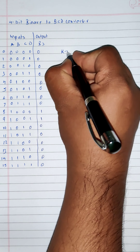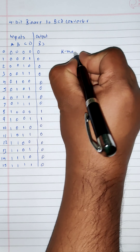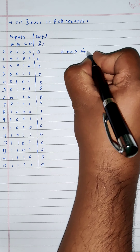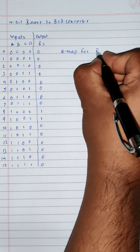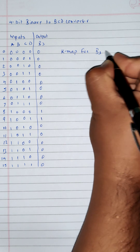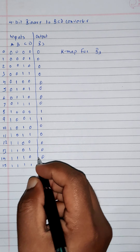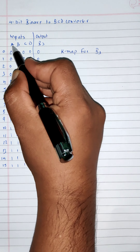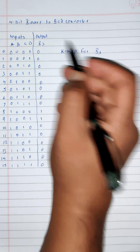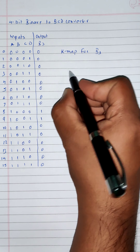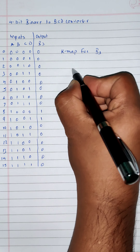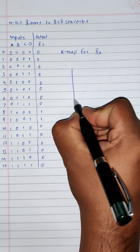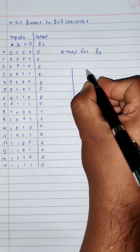So let's draw the Kmap for B3. Now it is going to be a 4-variable Kmap because the inputs are 4. So let's draw a 4-variable Kmap with 4 rows and 4 columns.